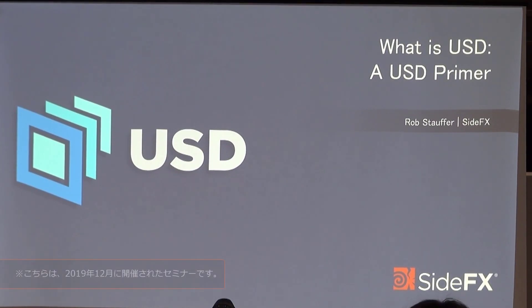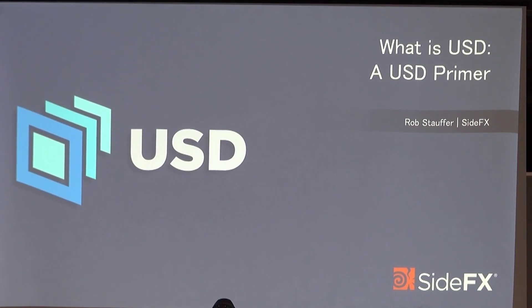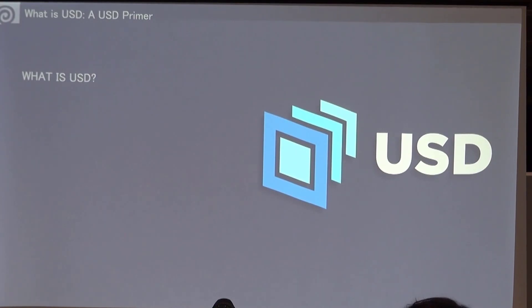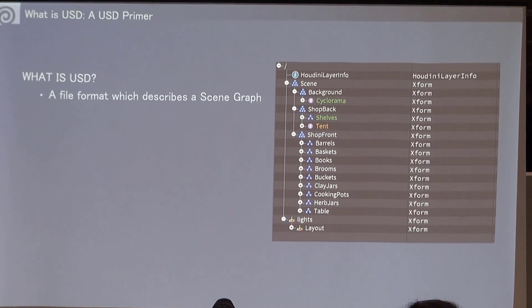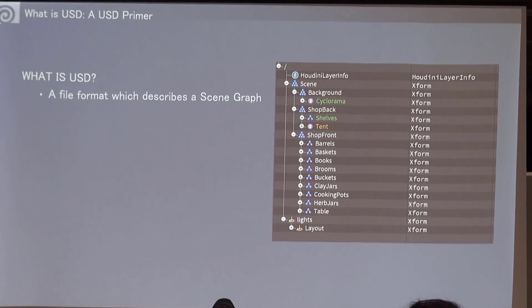We'll start off the day by going through some of the basics and basic terminology. USD stands for Universal Scene Description, and that's exactly what it is. If you're familiar with Alembic, it sort of takes all of that a step further. It's a file format that describes the scene graph like you see here.